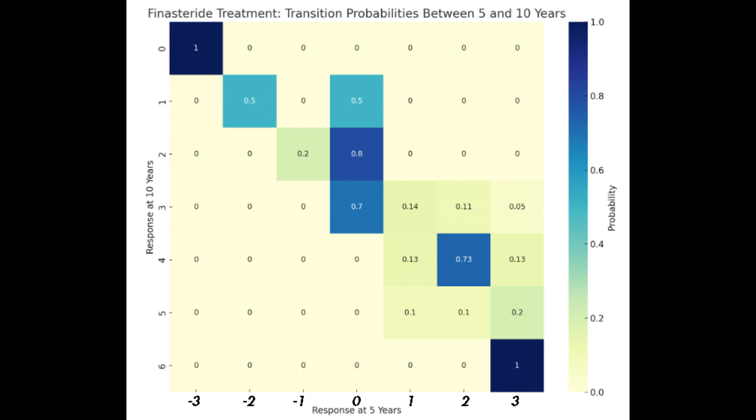Looking at the cells that do not fall in the diagonal line provides insights into the changes in patients' conditions. Take, for instance, a cell where the 5-year response is 0, signifying no change, and the 10-year response is 1, indicating improvement.